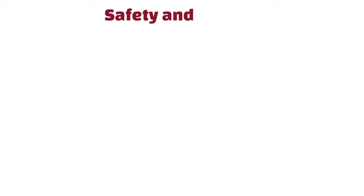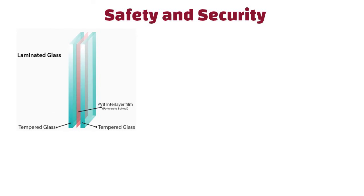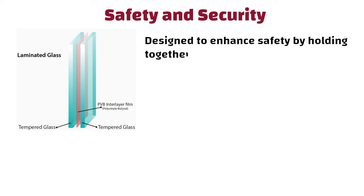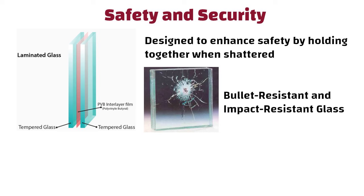Safety and Security. Some glass types, like laminated glass, are designed to enhance safety by holding together when shattered. Bullet-resistant and impact-resistant glass are examples that provide additional security.